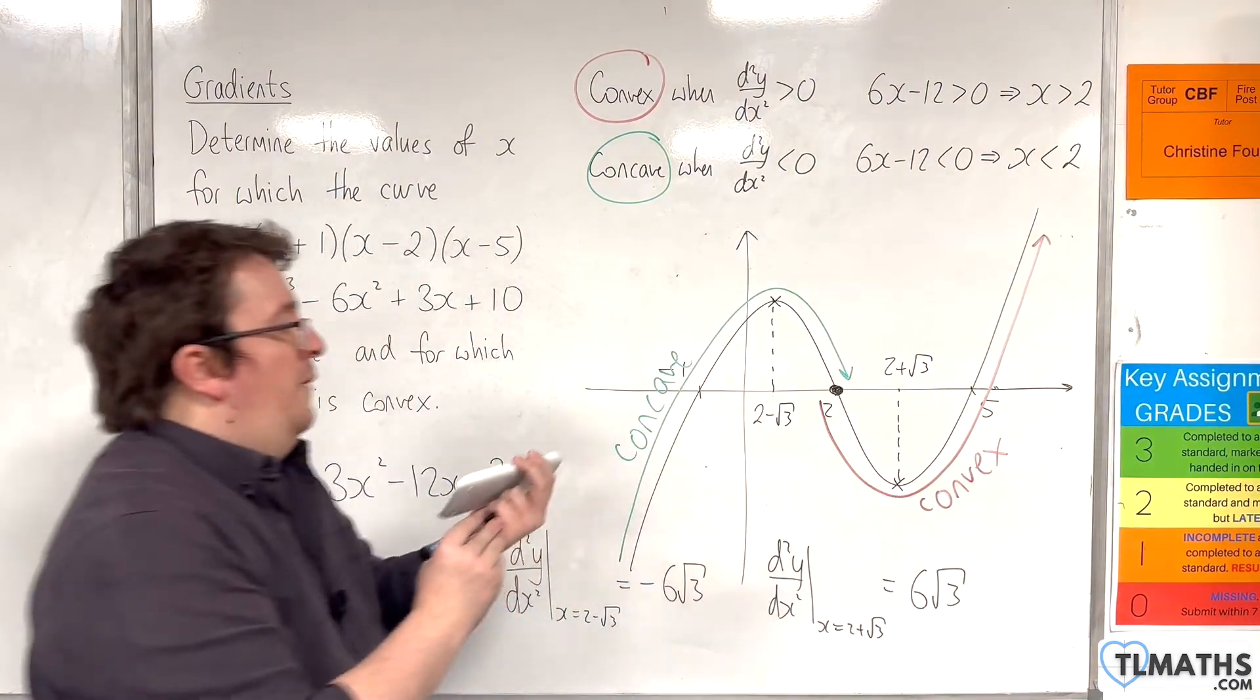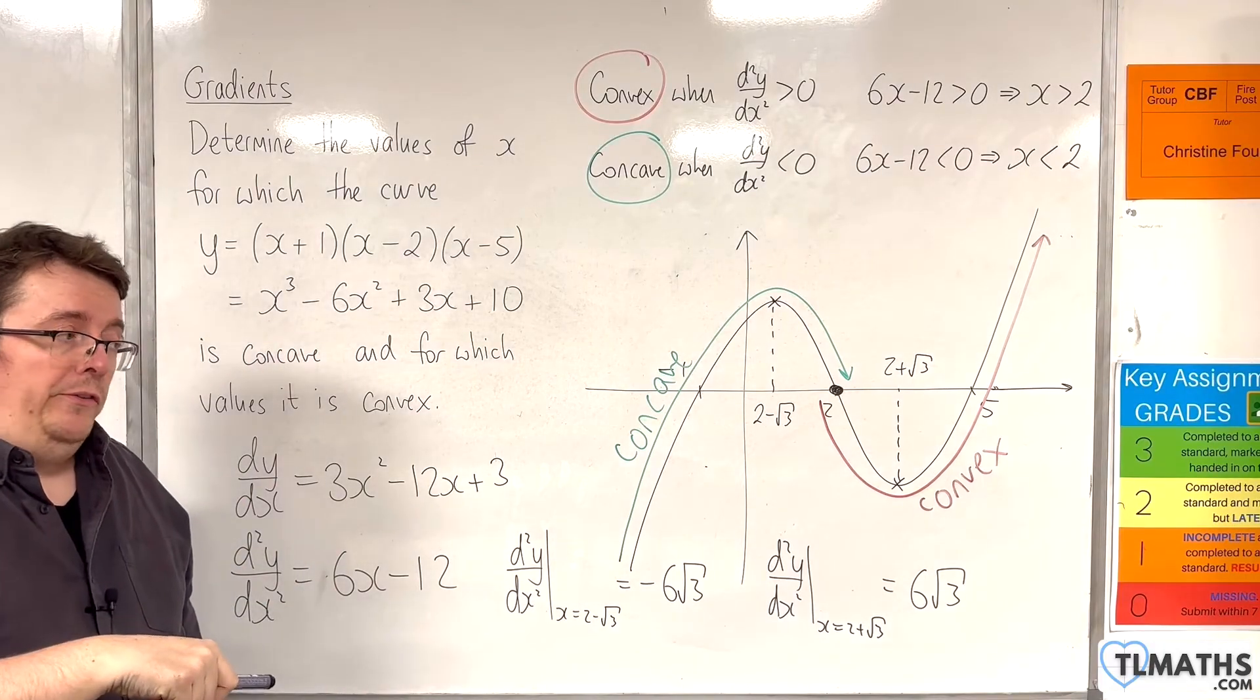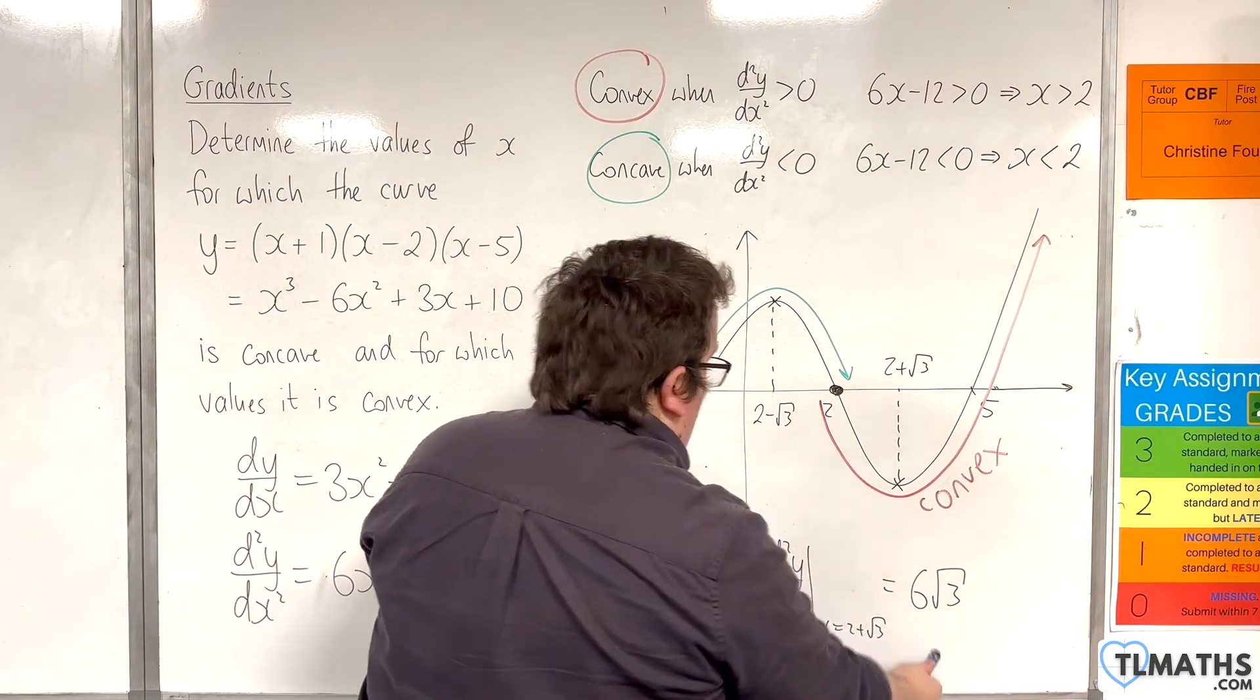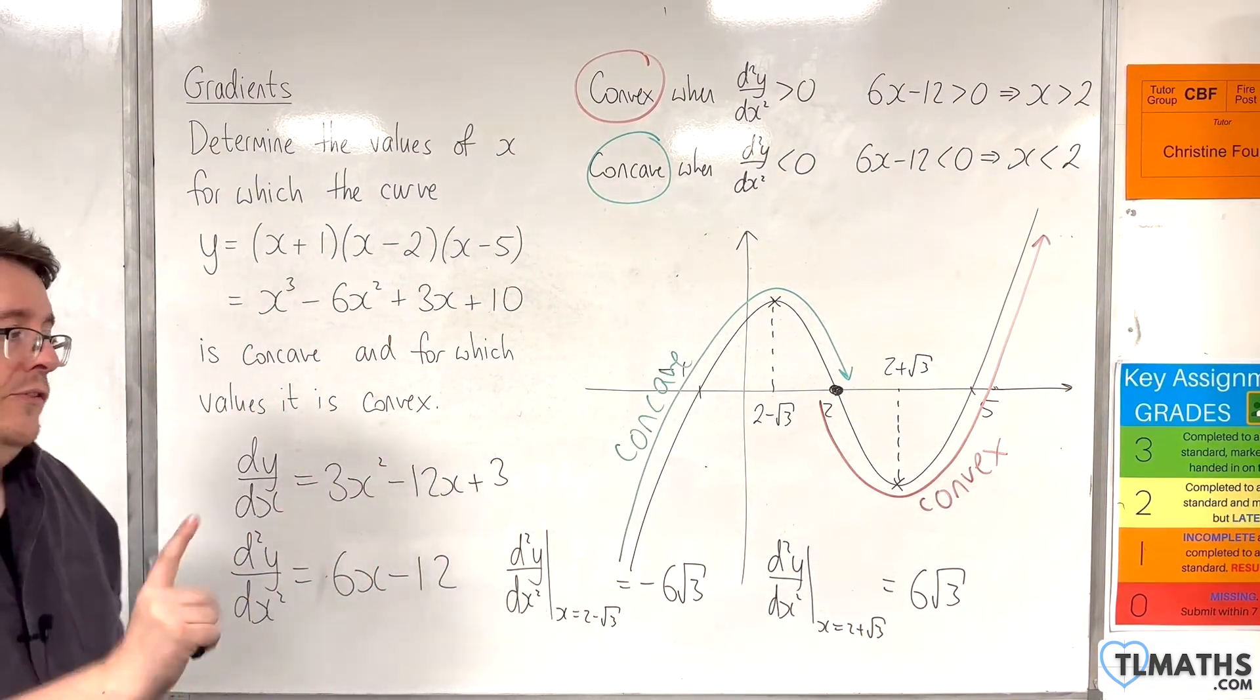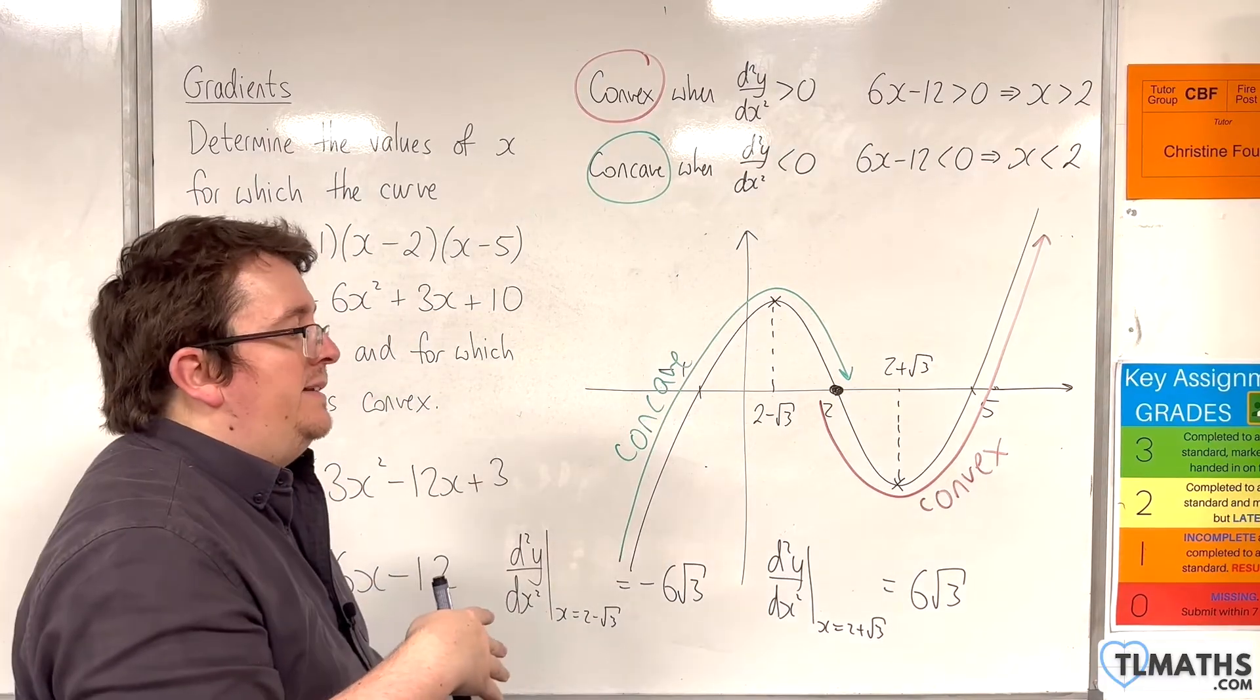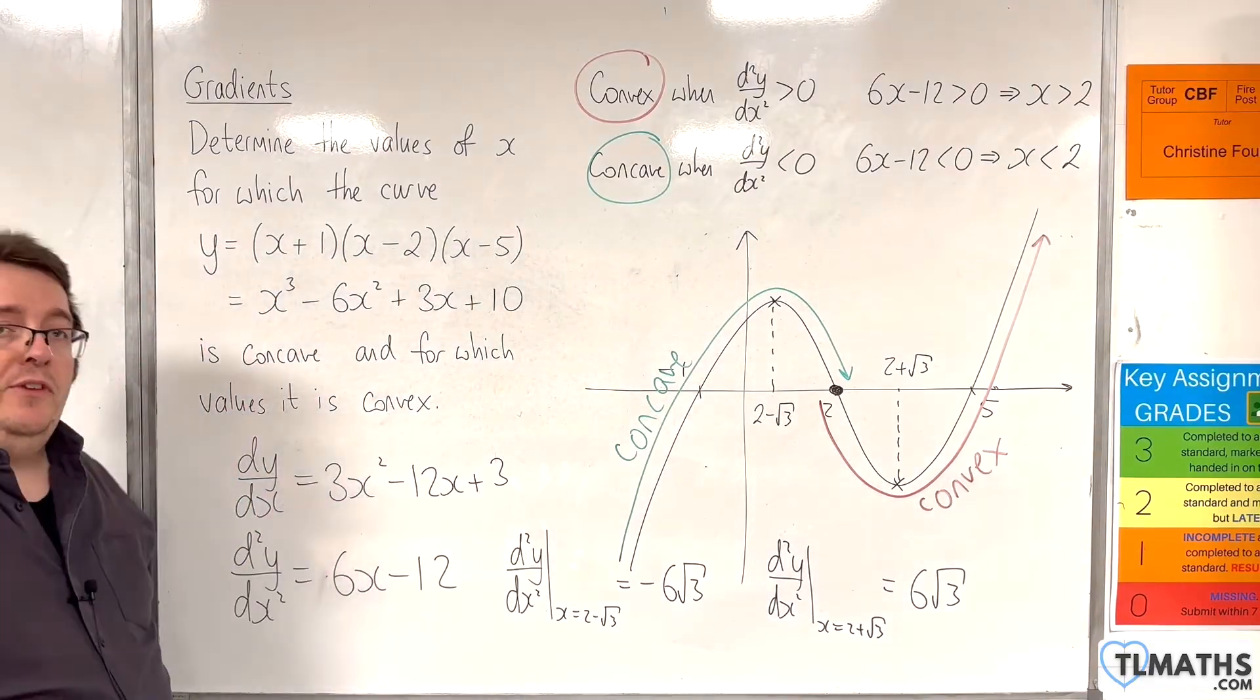So, what you'll find is that if you put the stationary points into the second derivative, the value that you get here will always be the same. But you'll have plus minus. One will be positive. One will be negative. And that is a feature of the cubic curve due to its symmetry.